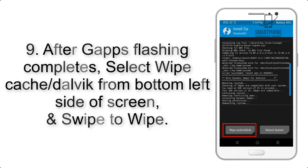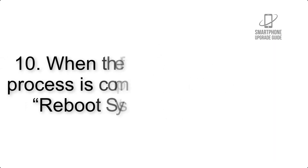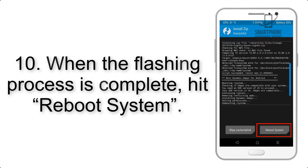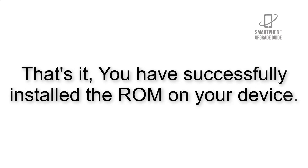Step 9: After GApps flashing completes, select Wipe Cache and Dalvik from the bottom left side of the screen and swipe to wipe. Step 10: When the flashing process is complete, hit Reboot System. That's it — you have successfully installed the ROM on your device.